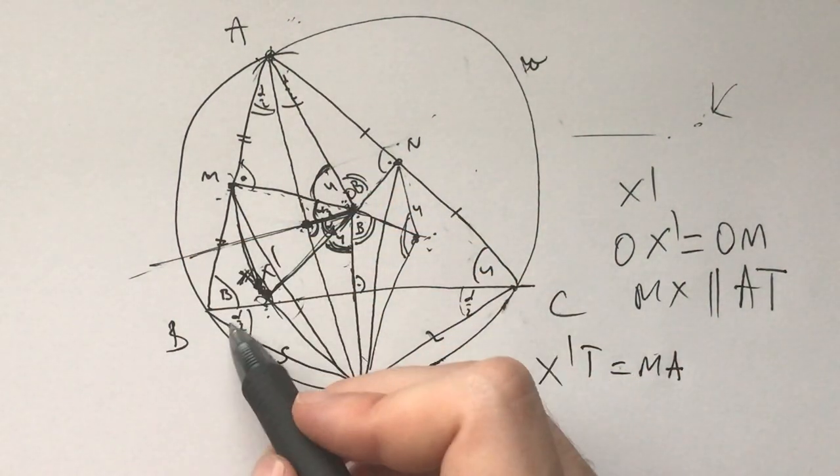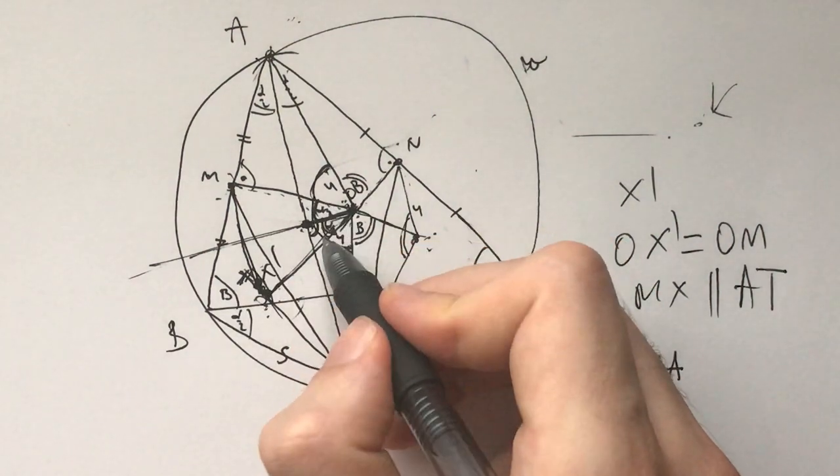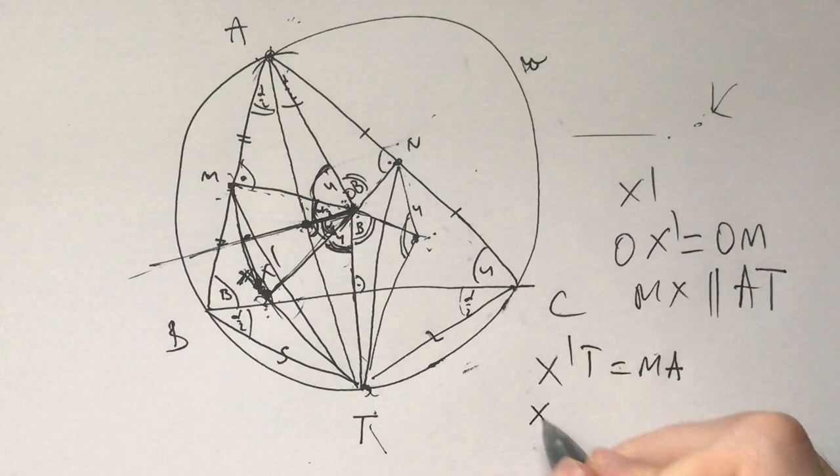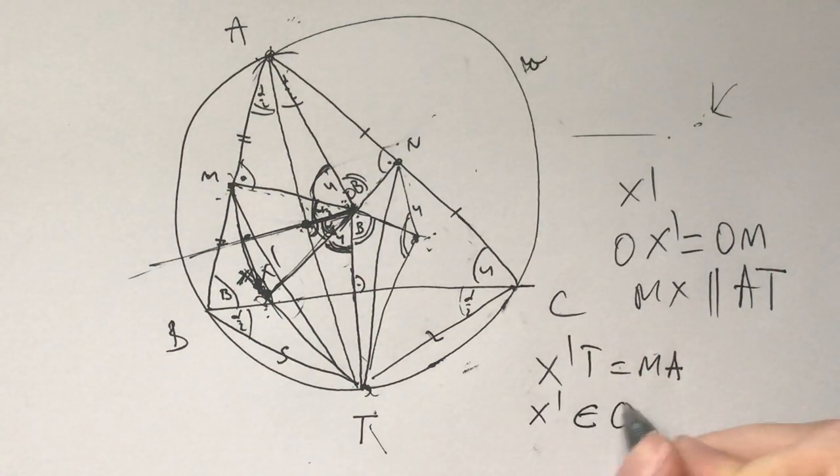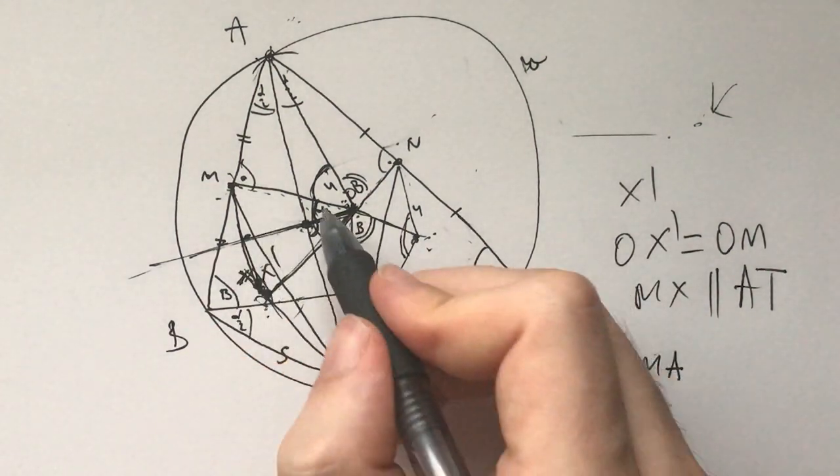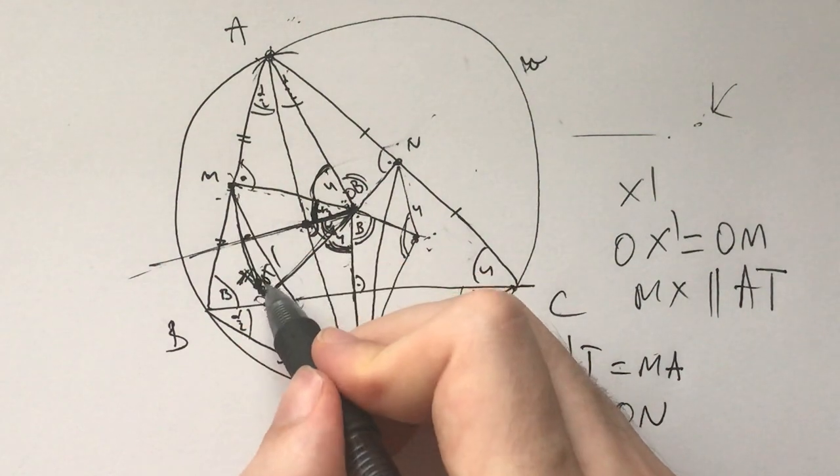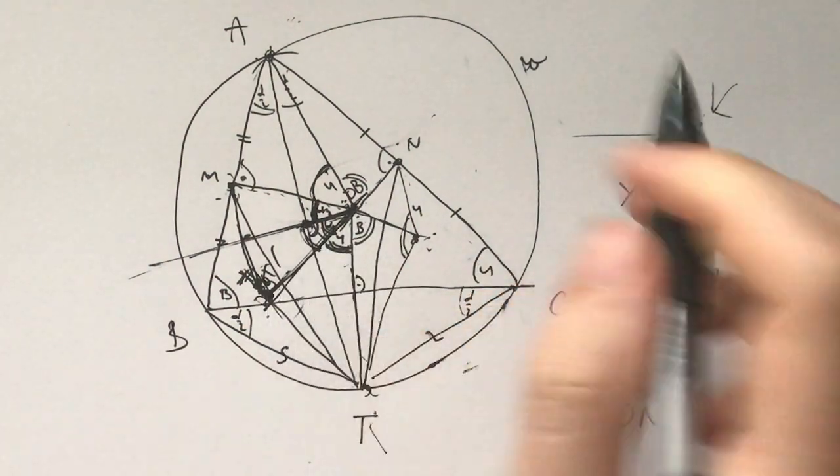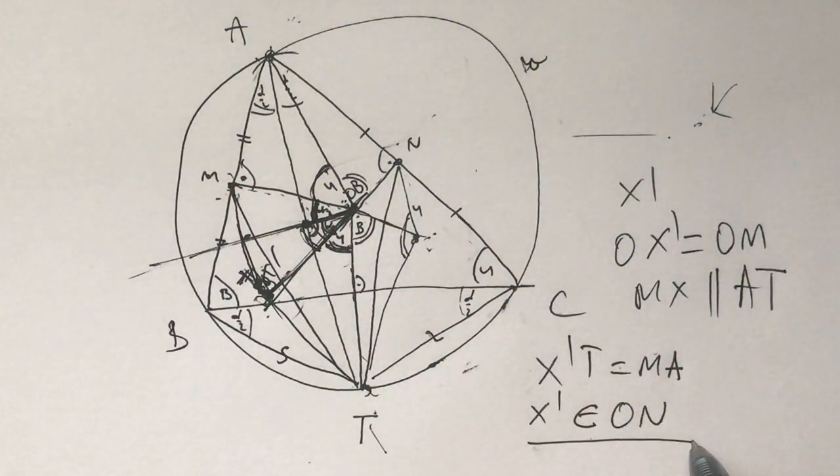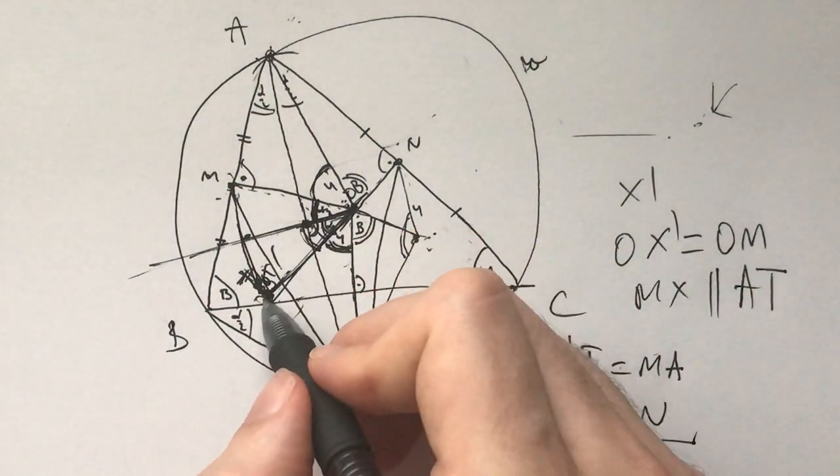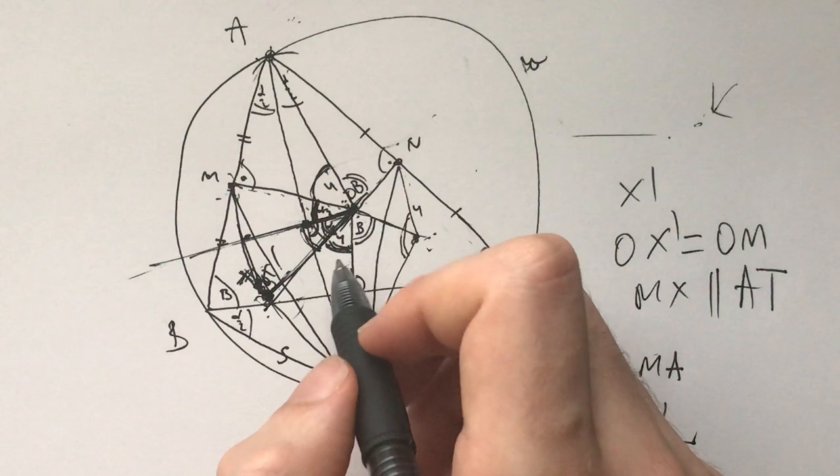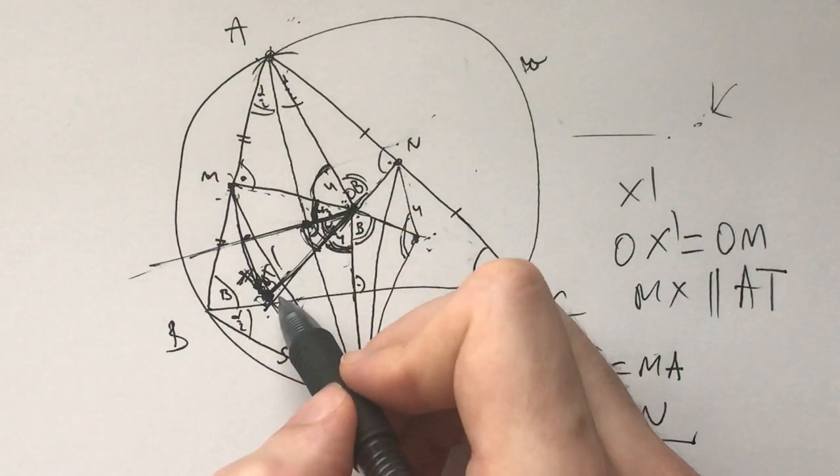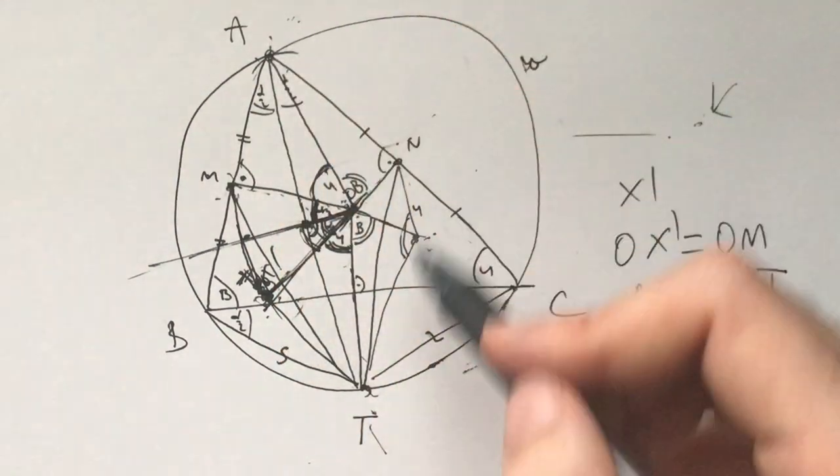And now with that, we also have, we angle chase here. Here, we have, this is alpha half, so this X prime point is an element of ON, because if this is alpha half, once we translate it, we would have that this angle also needs to be alpha half. So that also holds true for X prime. And now, is there, are there many points which define this? So how do we have X prime? We have that X prime T is MA. Maybe we need to calculate X prime O.